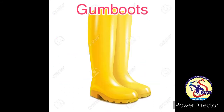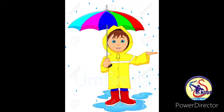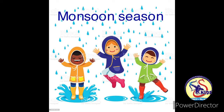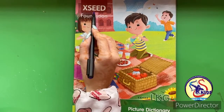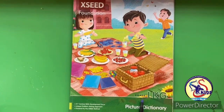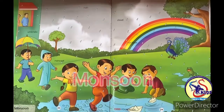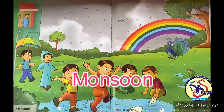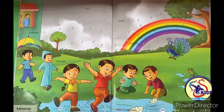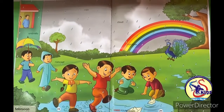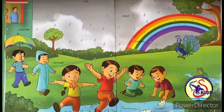We also carry umbrellas — they keep us dry during the rain. Now let's do the picture reading from the book. Let's open the Exceed Foundation Picture Dictionary for LKG, page number 23. Today our topic is monsoon season, which we also call the rainy season. In the rainy season we feel so pleasant.